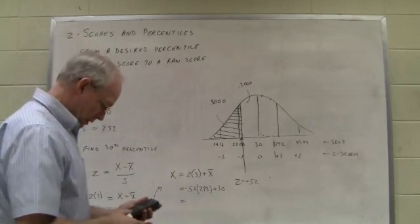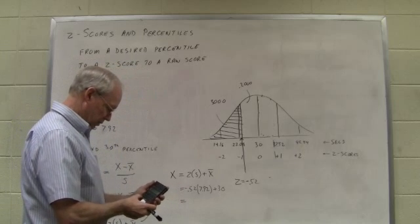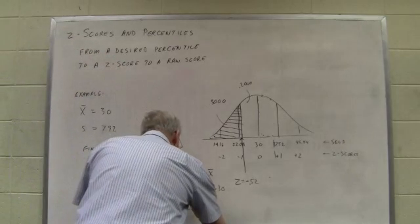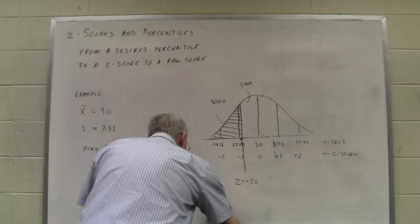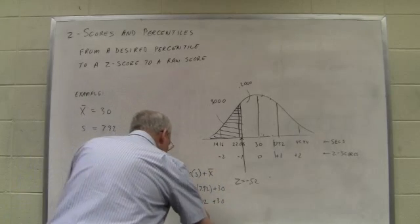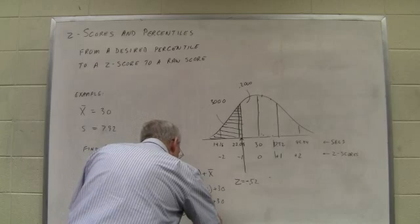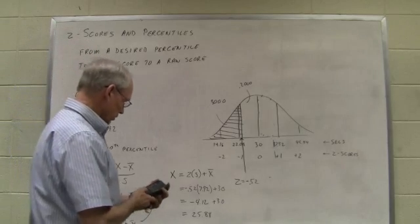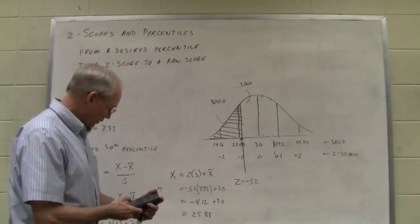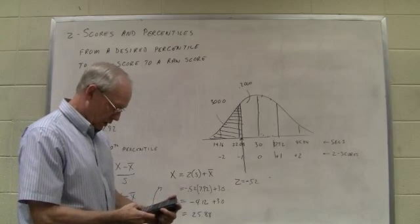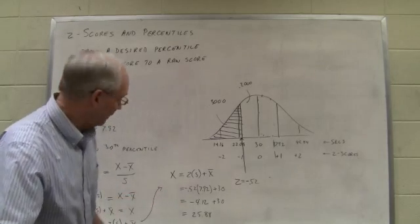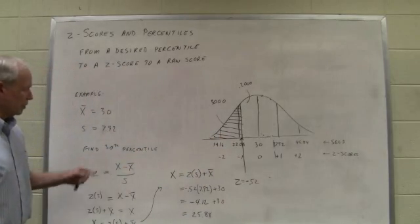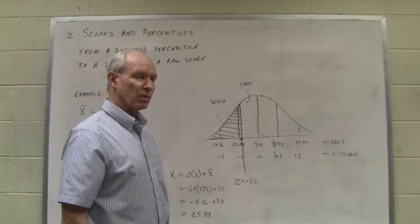So, once again, 0.52 times 7.92. That's going to be a negative 4.12. And that should be 25.88. I better check that to make sure I really subtracted it right. 30 minus 4.12 equals 25.88. So, we wanted to know what raw score corresponded to the 30th percentile. It turns out that a score of 25.88 does.